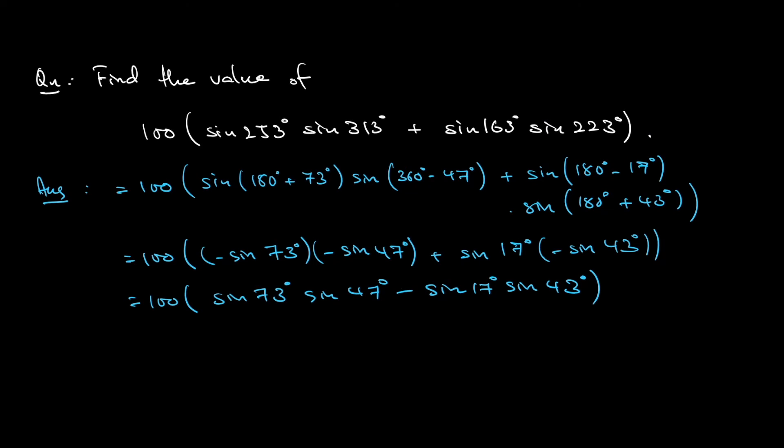How can we continue from here? One route: keep sine 47 degrees, do not touch it. But sine 73 degrees is in fact 90 degrees minus 17 degrees, so that will change to cosine 17 degrees.